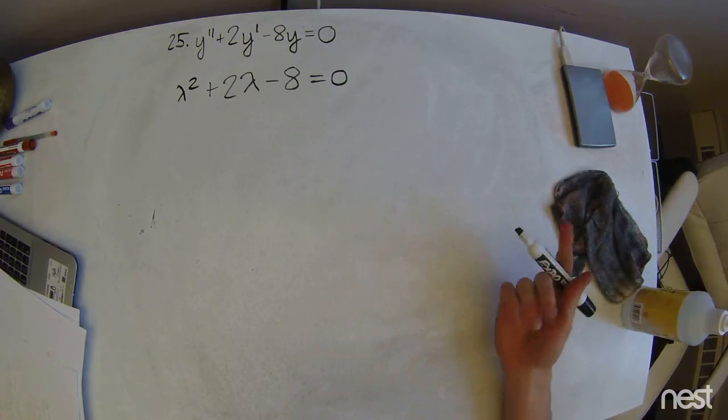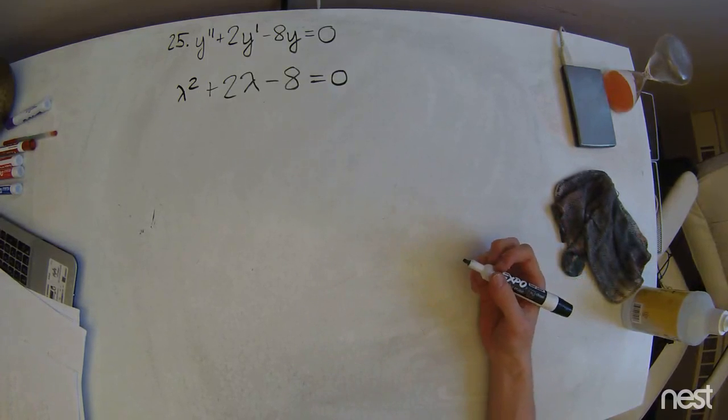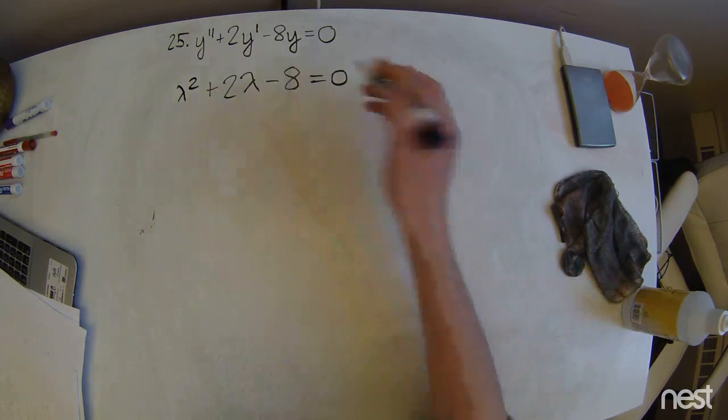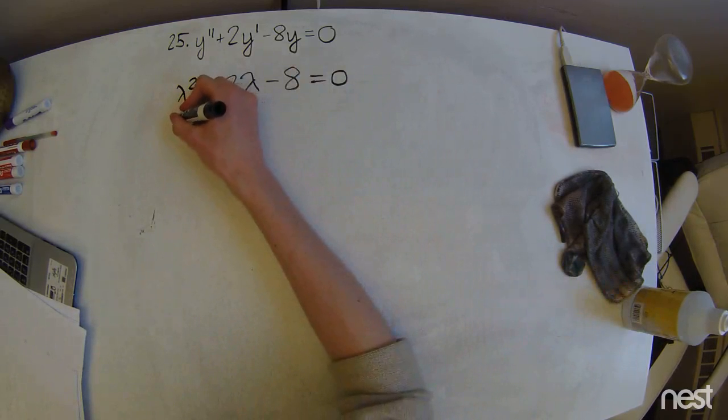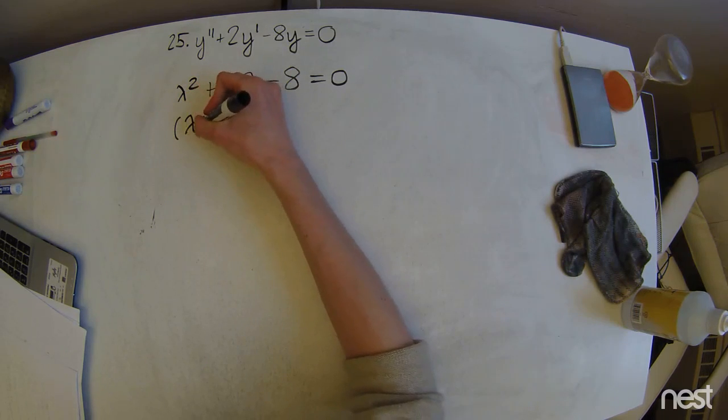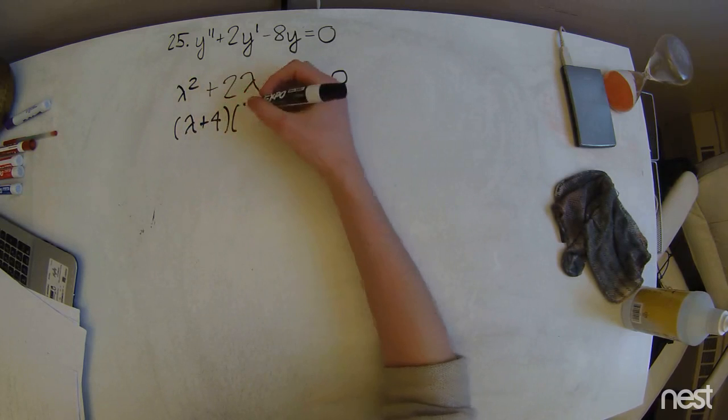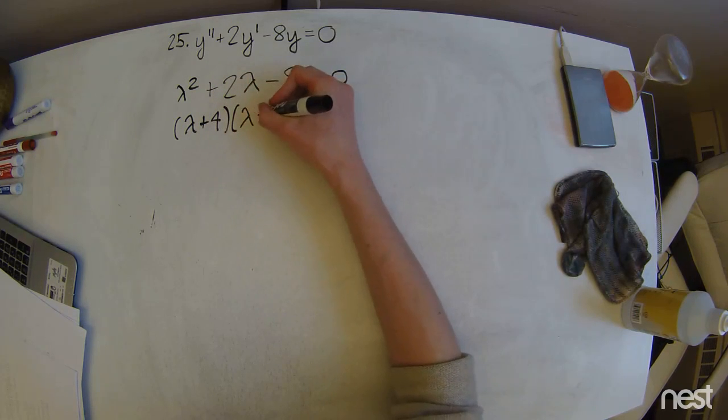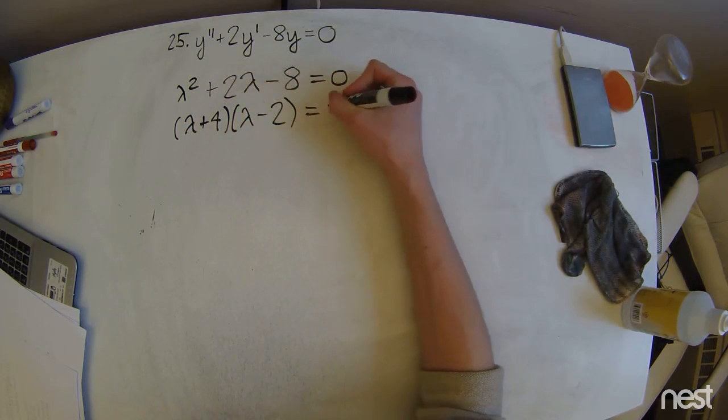So now we need to find the roots of this equation. We can pretty easily just factor out this expression. It's going to be lambda plus 4 times lambda minus 2 equals zero.